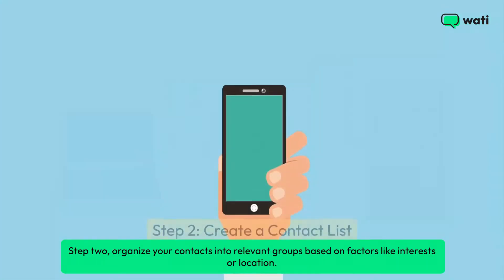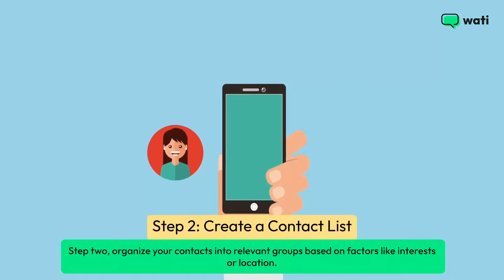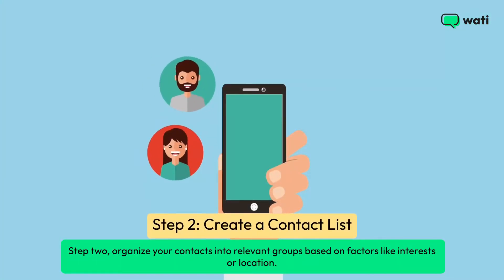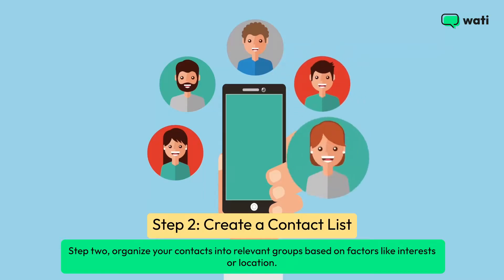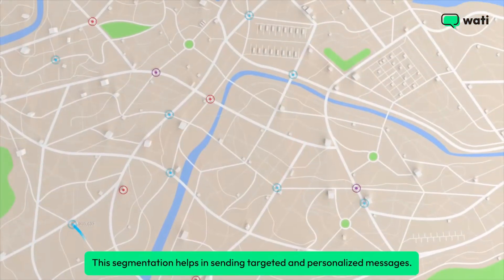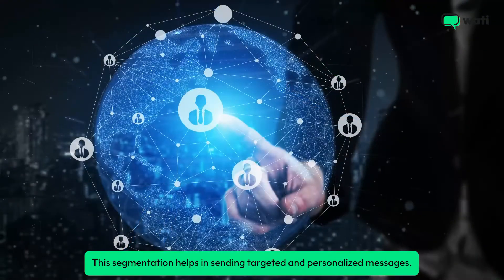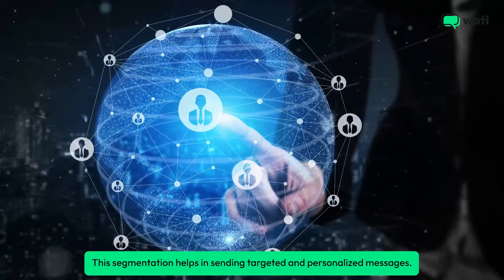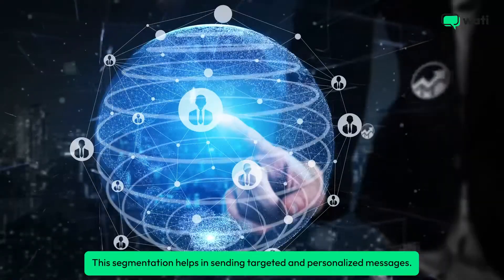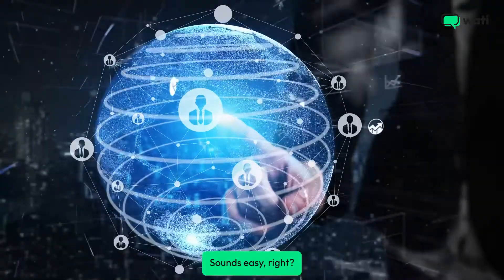Step 2: organize your contacts into relevant groups based on factors like interests or location. This segmentation helps in sending targeted and personalized messages.